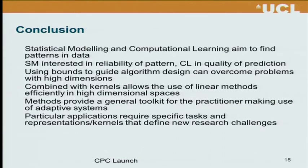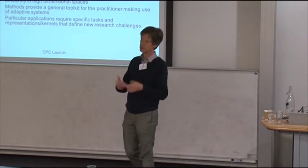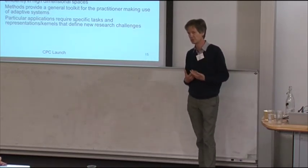In conclusion, statistical modeling and computational learning both aim to find patterns in data. Statistical modeling is more interested in reliability of the pattern; computational learning in the quality of the prediction. Using bounds can guide algorithm design to overcome problems with high dimensions, and combined with kernels allows linear methods to work efficiently in high dimensional spaces. Together, we get a general toolkit for making adaptive systems for a range of applications, integrating different data sources and creating analyses of different types of problems. Particular applications will create new research challenges, which I think we'll definitely meet in the problems we face in this project.